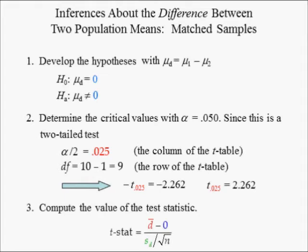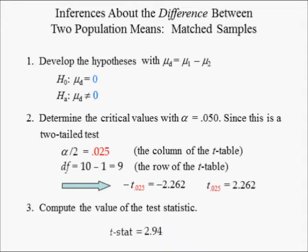Next, compute the value of the test statistic. The denominator of t-stat is the standard error of the difference in means. Substituting in the mean differences in delivery times of 2.7 hours, the hypothesized difference of 0, the standard deviation of the differences in delivery times of 2.9 hours, and the sample size of 10 yields a t-stat equal to 2.94.